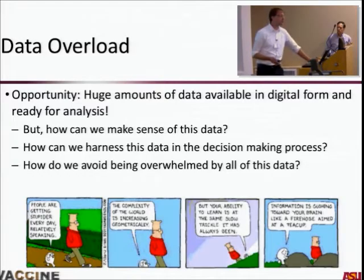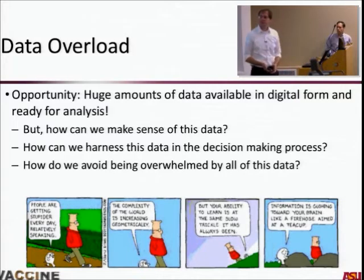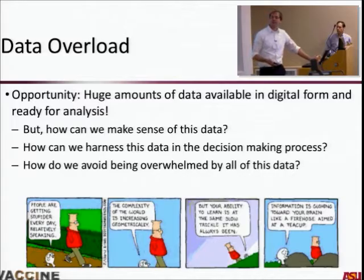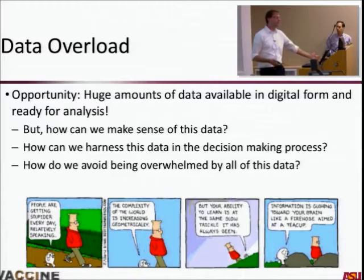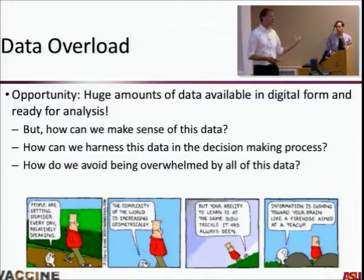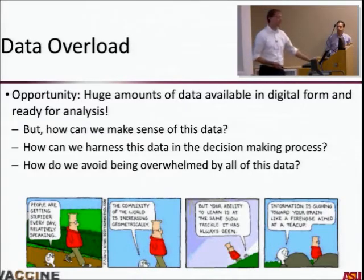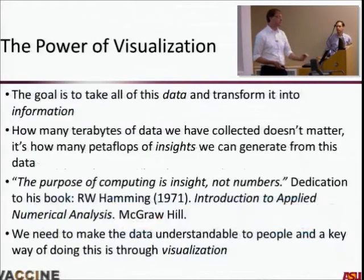Can we harness this data to help with the decision-making process, and how do we avoid being overwhelmed? There's a Dilbert cartoon where people are getting stupider every day, relatively speaking. The complexity of the world is increasing geometrically, but our ability to learn is the same slow trickle it's always been. Information is gushing towards our brain like a fire hose aimed at a teacup. So how can we start understanding this information and making sense of it?